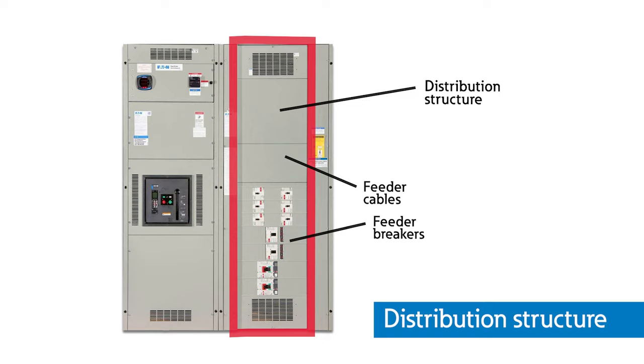Cables can enter through the structure from the floor, referred to as bottom entry, or from above, also known as top entry. Distribution structures divide and send power to branch circuit protection devices and then to branch circuits to power downstream loads. Power flows from the main structure to the distribution structure via cross bus or horizontal bus.